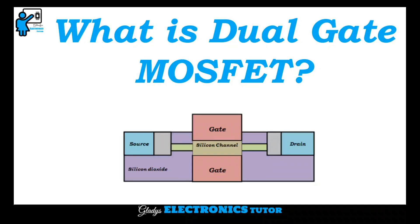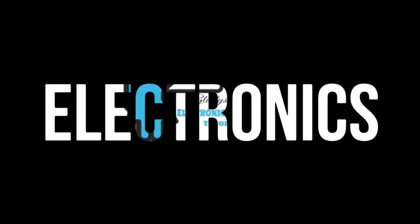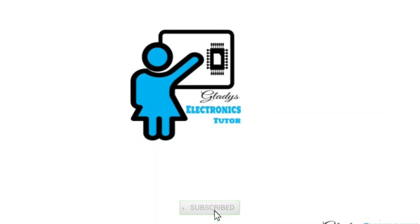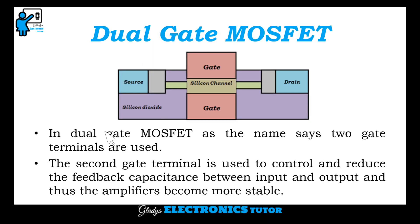Hi, I'm Gladys. Welcome to my channel. In this video, let's see what a dual gate MOSFET is. In a dual gate MOSFET, as the name says, two gate terminals are used. The second gate terminal is used to control and reduce the feedback capacitance between input and output, and thus it makes amplifiers more stable.